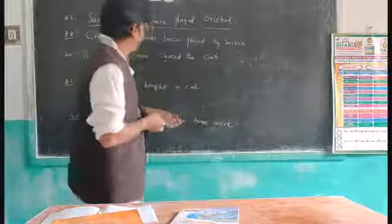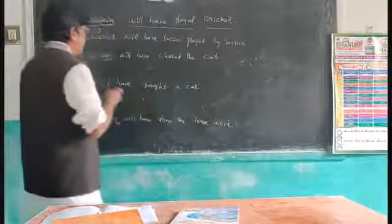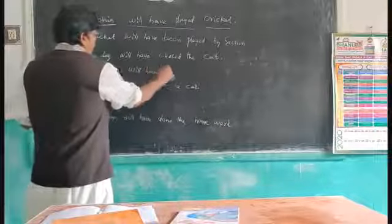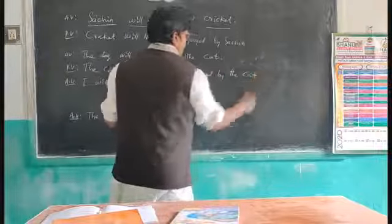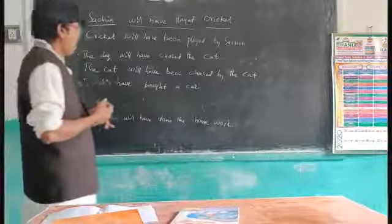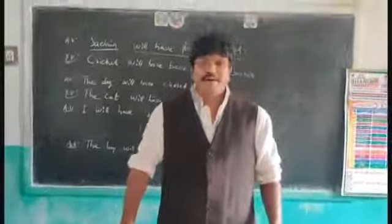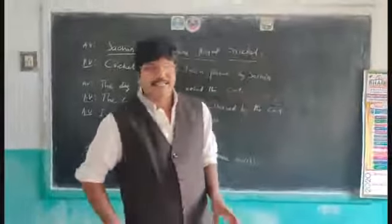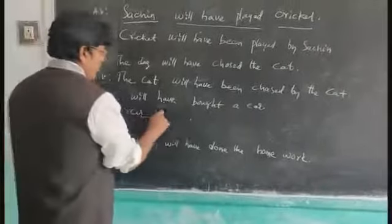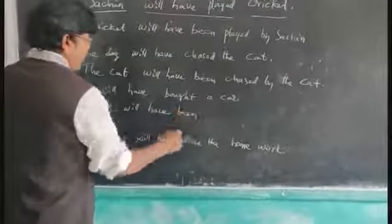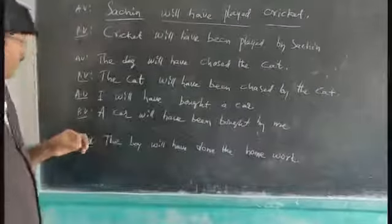Another example: 'The dog will have chased the cat.' In passive voice, 'the cat' becomes the subject: 'The cat will have been chased by the dog.' Also: 'I will have bought a car next year January.' In passive voice, this becomes: 'A car will have been bought by me, next year January.'